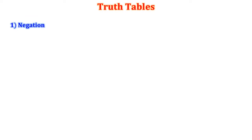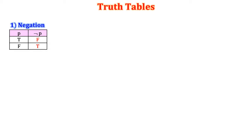1. Negation. If P is a statement, then negation is denoted as NOT P. If P is true then NOT P is false. If P is false then NOT P is true. So remember for NOT P, we have to change T to F and F to T.